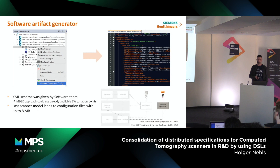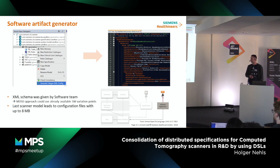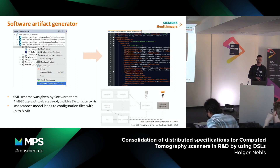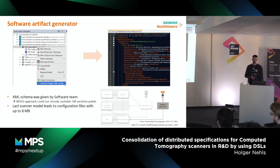The second generator we have is the XML generation. One part of our software now receives directly generated XML configuration files. The interface for the software already existed in the former version, but these XML files were created manually. Currently we create XML files with up to 8 megabytes in size, and it's not very enjoyable to create them manually, so it really makes sense to use this automation path.